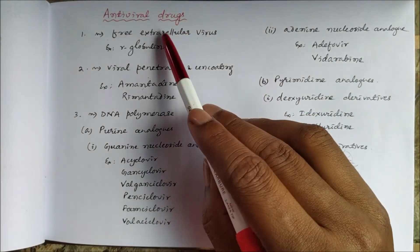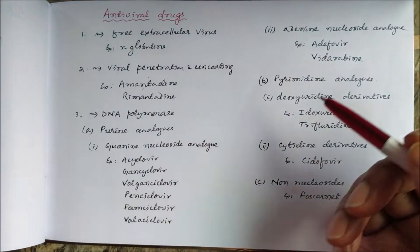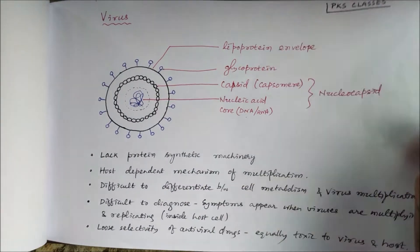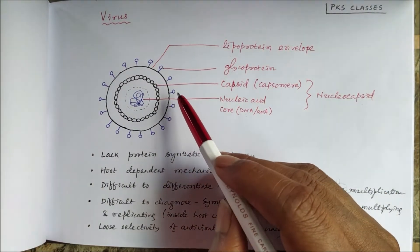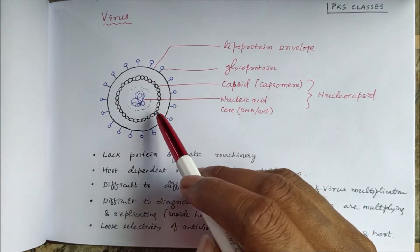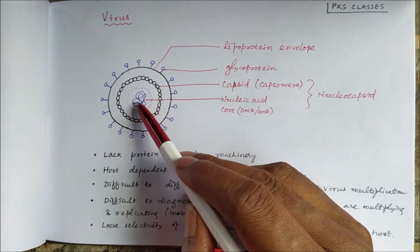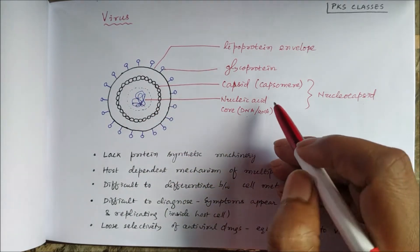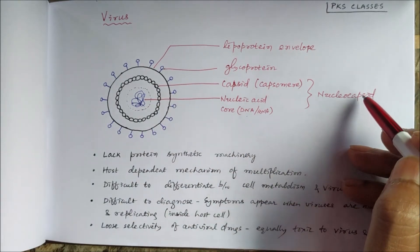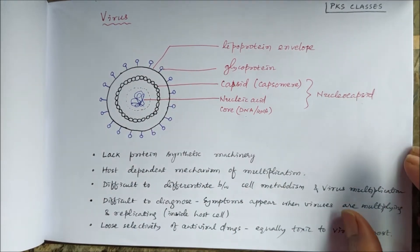Today we will study antiviral drugs — their classification, mechanism of action, and uses. Before that, let us review virus structure. A virus has three components: the outer lipoprotein envelope containing glycoproteins on its surface, the inner capsid layer consisting of capsomeres, and the nucleic acid core which may be either DNA or RNA. The capsid and nucleic acid core together are known as the nucleocapsid.